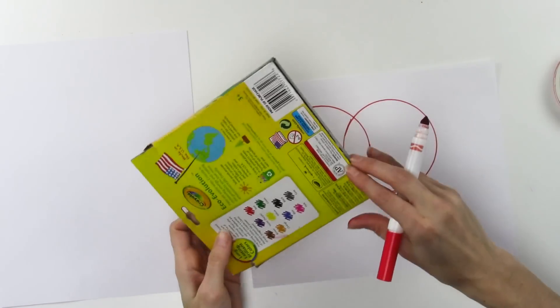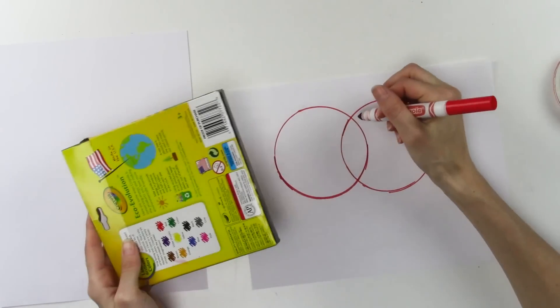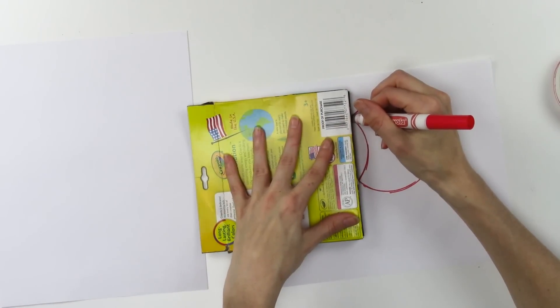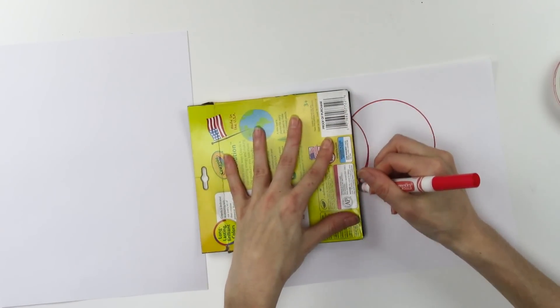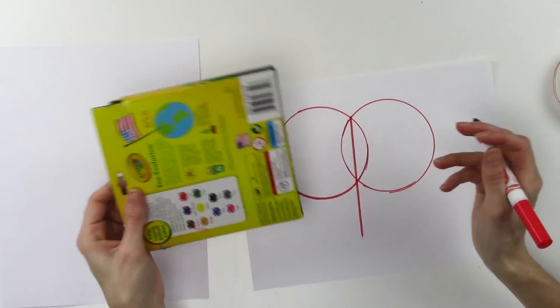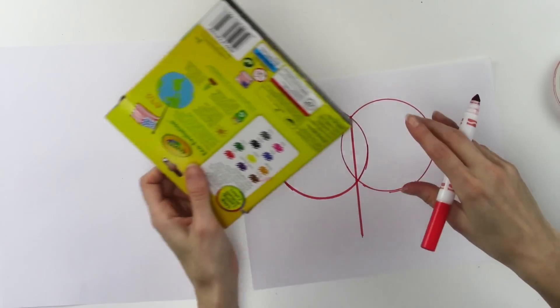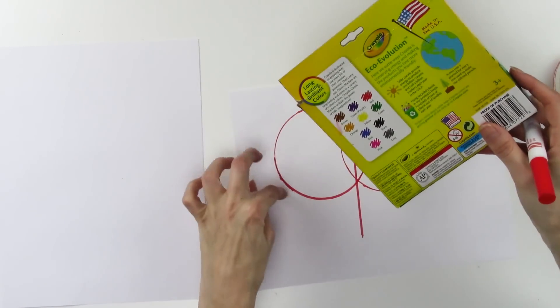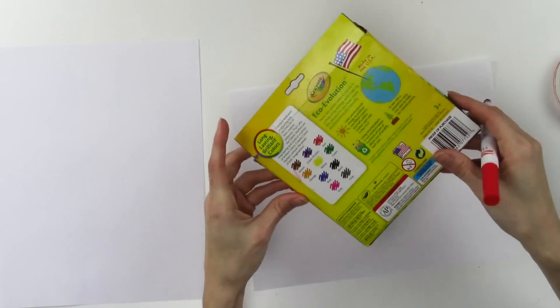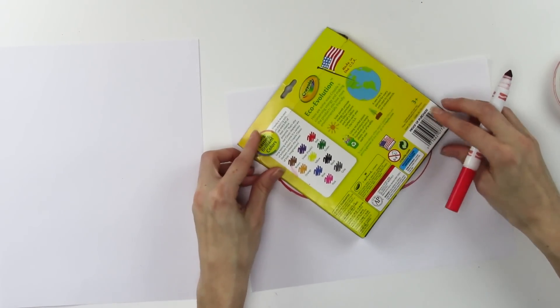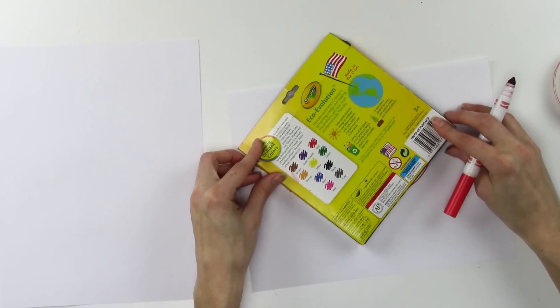Then you grab your straight square edge and you see this point right here. What you're going to do is you're going to draw a line going down, and somewhere on this line you're going to end up making a square with this. You're going to put that point on there and you're going to keep going down.